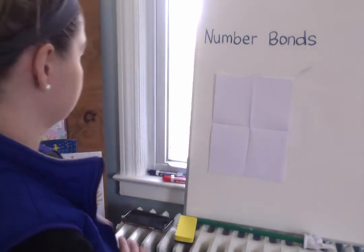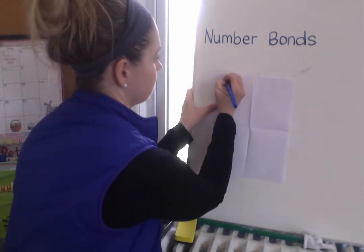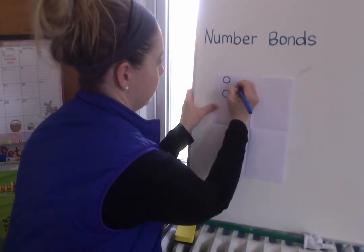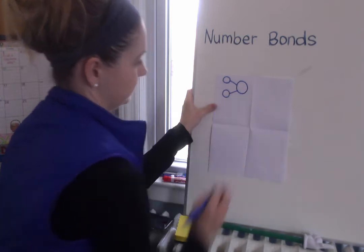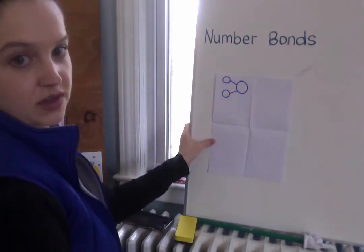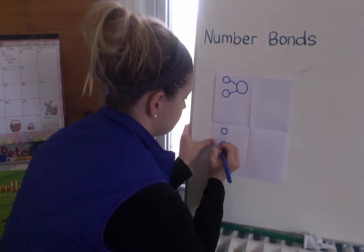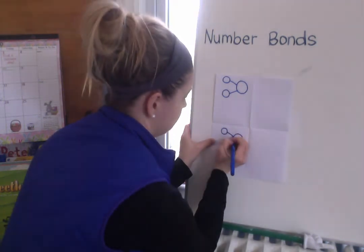So in the first corner we're gonna draw a number bond. We're gonna go little circle, little circle, big circle, and connect. We'll do another one down here, little circle, little circle, big circle, connect.